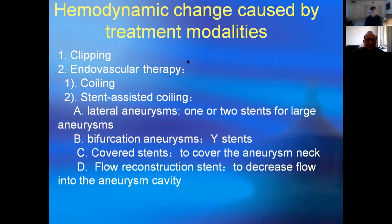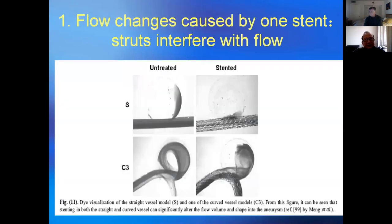Now let's turn to the effects of treatment modalities on aneurysm recurrence. Treatment options include clipping, coiling, stent-assisted coiling, covered stent, and reconstructing stent. Placing a better stent here means less blood flow will get into the aneurysm.